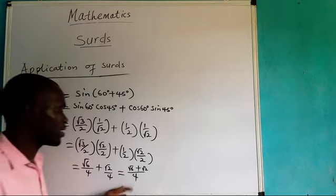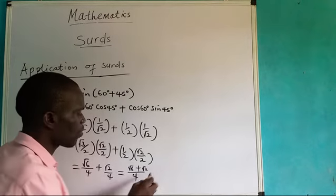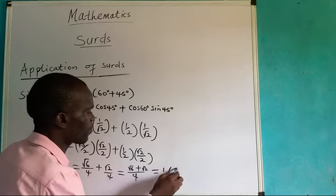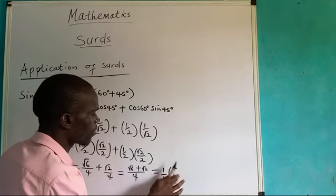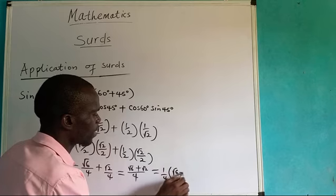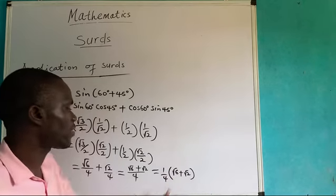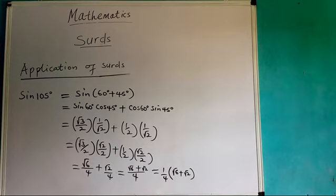We can still move on. But this one, if I leave it at this regular position, I will say 1 over 4. I will now have the sum of root 6 and root 2 inside the brackets. Either I leave it like this or I leave it like this. It means the same thing.